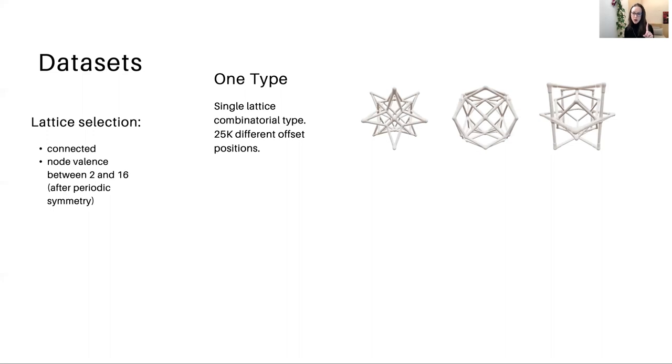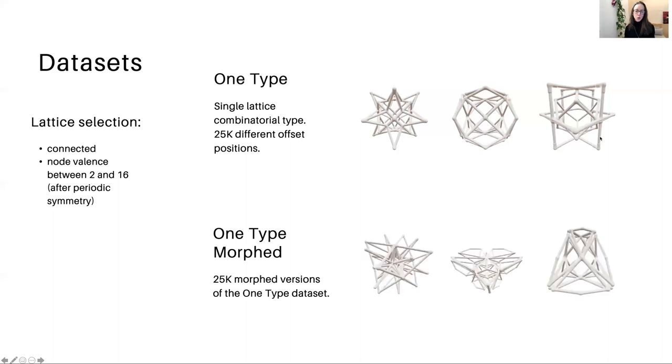We created this data set, the one-type data set, where we took a single combinatorial type, and we very densely sampled the offset positions. As you can see in these images, however, they did cover a really broad range of geometric embeddings in that data set. We also took a variation of that data set, which applied a random box morph to each of the lattices that created this morphed version of every lattice in that original data set.